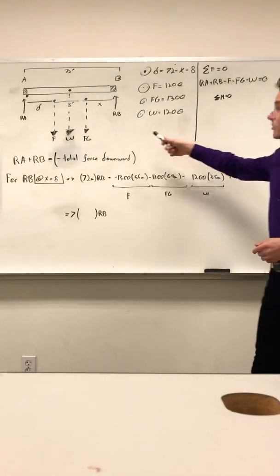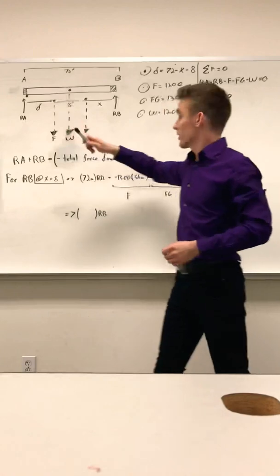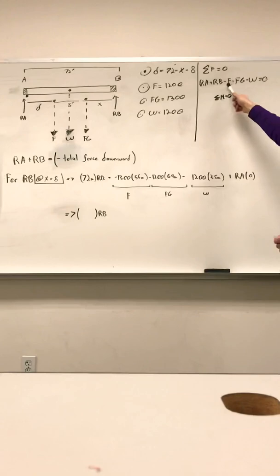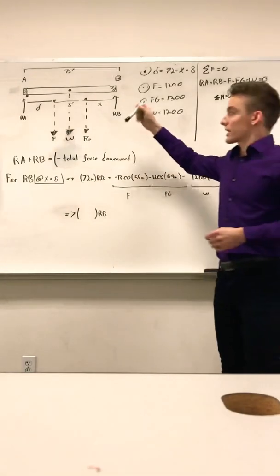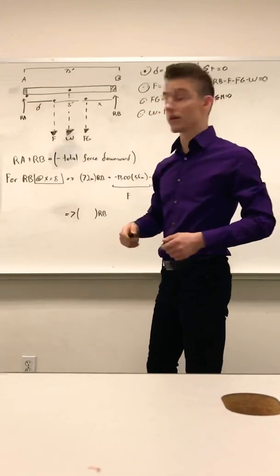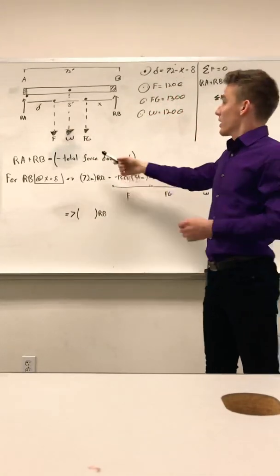Here we have two forces acting upward, the reaction point to A, and the reaction to point B. It's going to be upward. And the opposite forces, notice the negative sign, pushing against those forces are going to be the force F, which is given, W, which is the weight of your beam, also given.